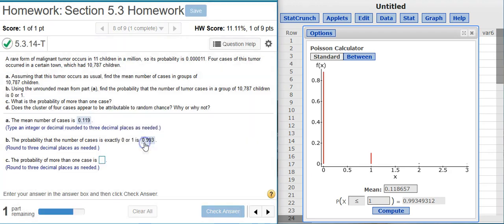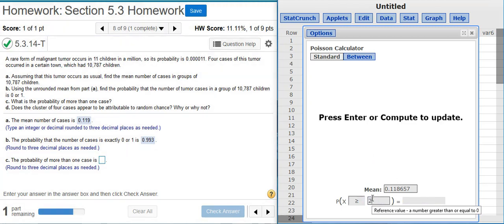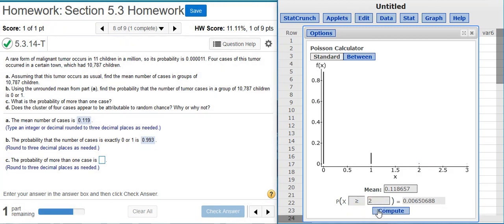Well done. Part C asks for the probability of more than one case, so what I need to do is switch this around. That's the same thing as saying two or more, so greater than or equal to two. And there's my value there.